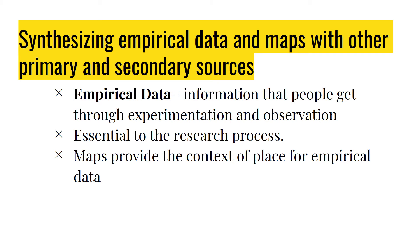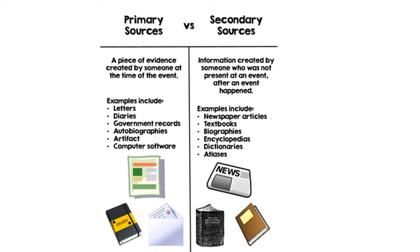Maps provide the context of place for empirical data. If you think about that political map, the empirical data is the electoral votes, and the map provided the context of place where those electoral votes came from for each political party. A primary source is a piece of evidence created by someone at the time of the event — examples include letters, diaries, government records, autobiographies, artifacts, and even computer software. Secondary sources are information created by somebody not present at an event or after it happened — examples include newspaper articles, textbooks, biographies, encyclopedias, dictionaries, and atlases. Note: if the person writes the biography themselves, it's an autobiography and is a primary source.